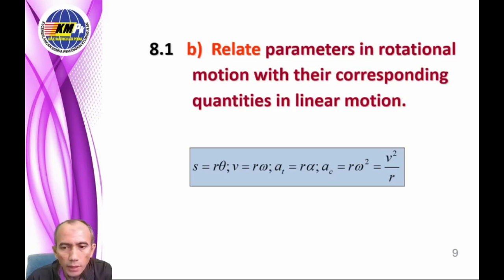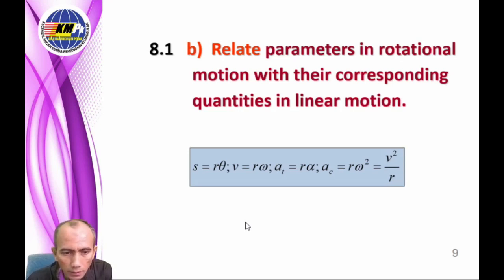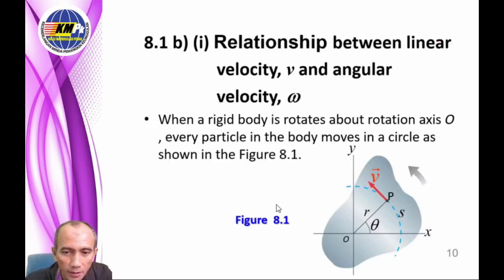Now let us look at the parametric equations relating linear and angular quantities. First, linear displacement equals the radius of circular motion from the axis times angular displacement. Second, linear velocity equals the radius times angular velocity. Third, tangential acceleration equals the radius times angular acceleration. Fourth, centripetal acceleration equals the radius times angular velocity squared, or equals linear velocity squared divided by the radius.